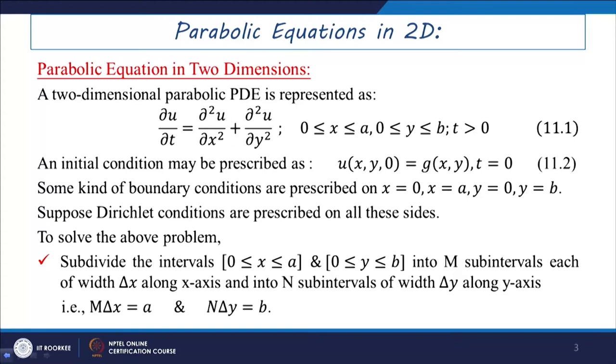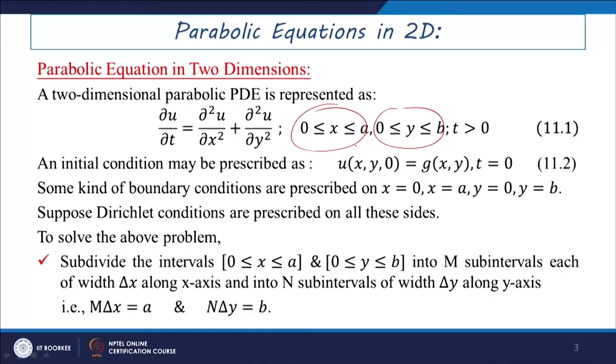For parabolic equations in two dimensions, this equation can be written in the form: del U / del T = del² U / del X² + del² U / del Y², where the boundary is defined within the region X lies between 0 to A and Y lies between 0 to B. This is a two-dimensional problem with three coordinates: X coordinate, Y coordinate, and T coordinate (time). Since space coordinates vary in X and Y direction, it is called the parabolic equation in two dimensions.